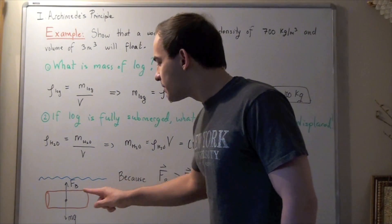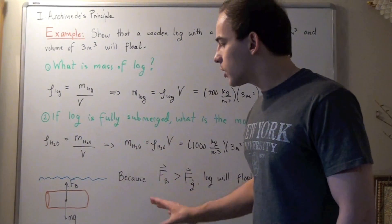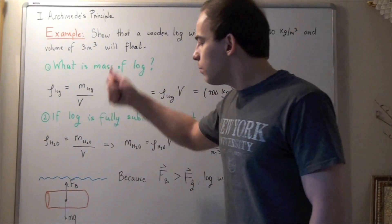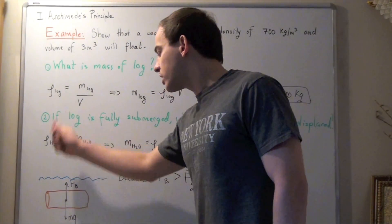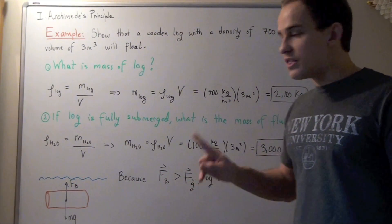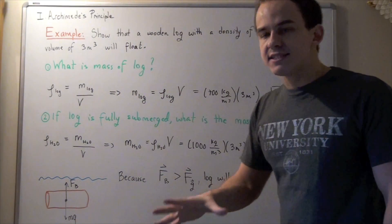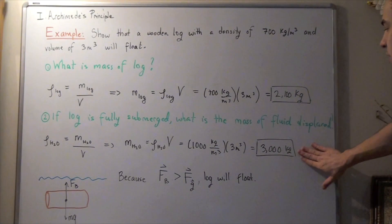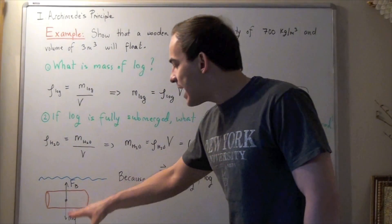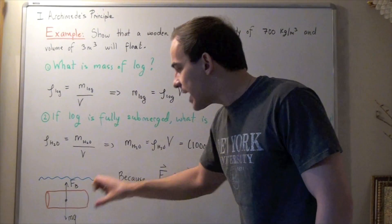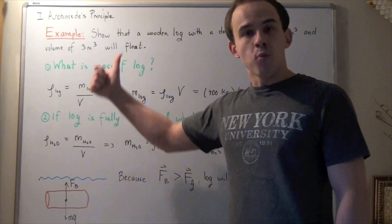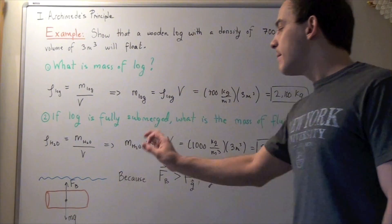If we draw the forces acting on our log while fully submerged, we get two forces: one acting downward — the gravitational force M times G — and the buoyancy force acting upward. The buoyancy force is larger than the force of gravity because the mass of water displaced is greater: 3000 versus 2100 kilograms. Because the upward force is greater than the downward force, there is a net force going upward. Once released, the log will accelerate upwards until it reaches the surface — and that's exactly why the object will float.